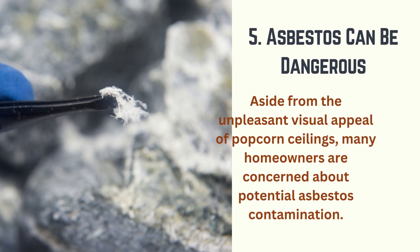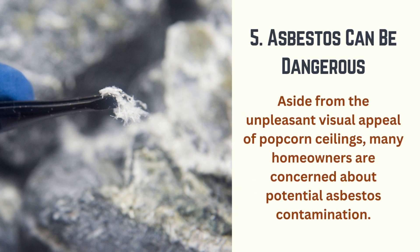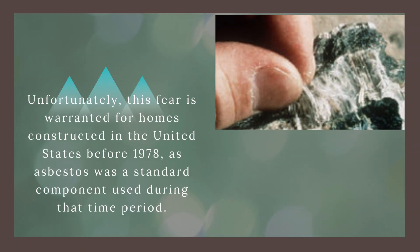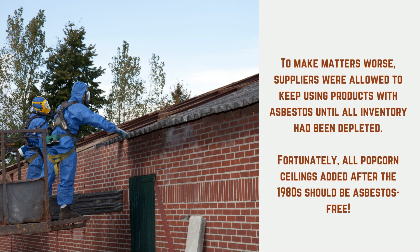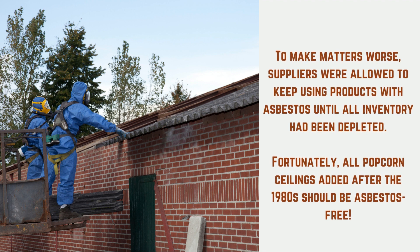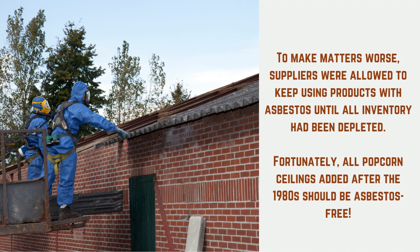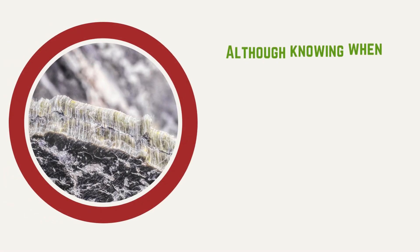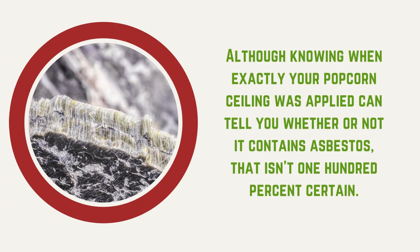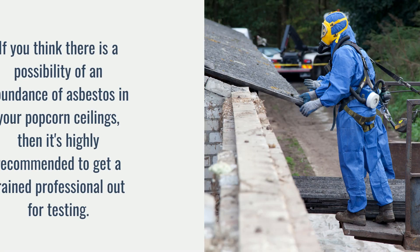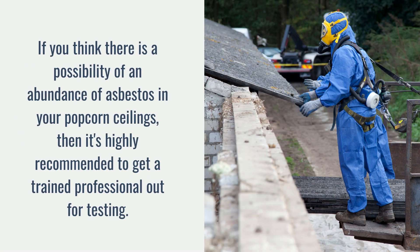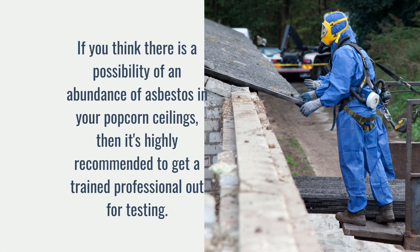Drawback five: asbestos can be dangerous. Many homeowners are concerned about potential asbestos contamination, and unfortunately this fear is warranted for homes constructed in the United States before 1978, as asbestos was a standard component used during that time period. Suppliers were even allowed to keep using products with asbestos until all inventory had been depleted. All popcorn ceilings added after the 1980s should be asbestos-free, but if there's any possibility of asbestos in your ceiling, it's highly recommended to get a trained professional out for testing.